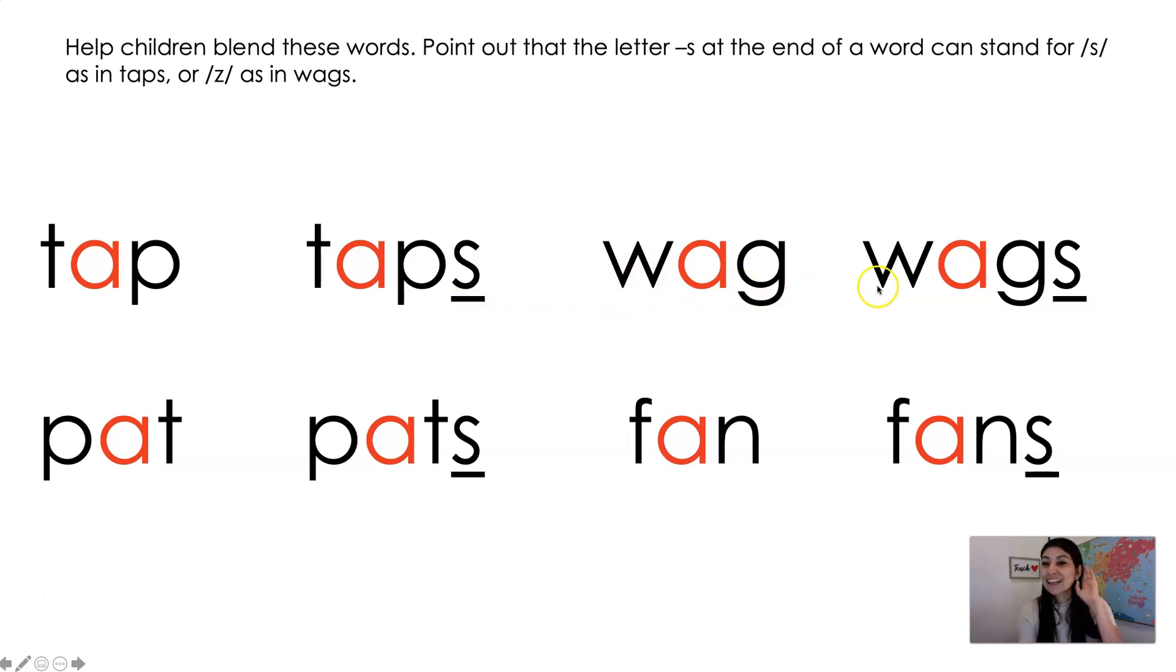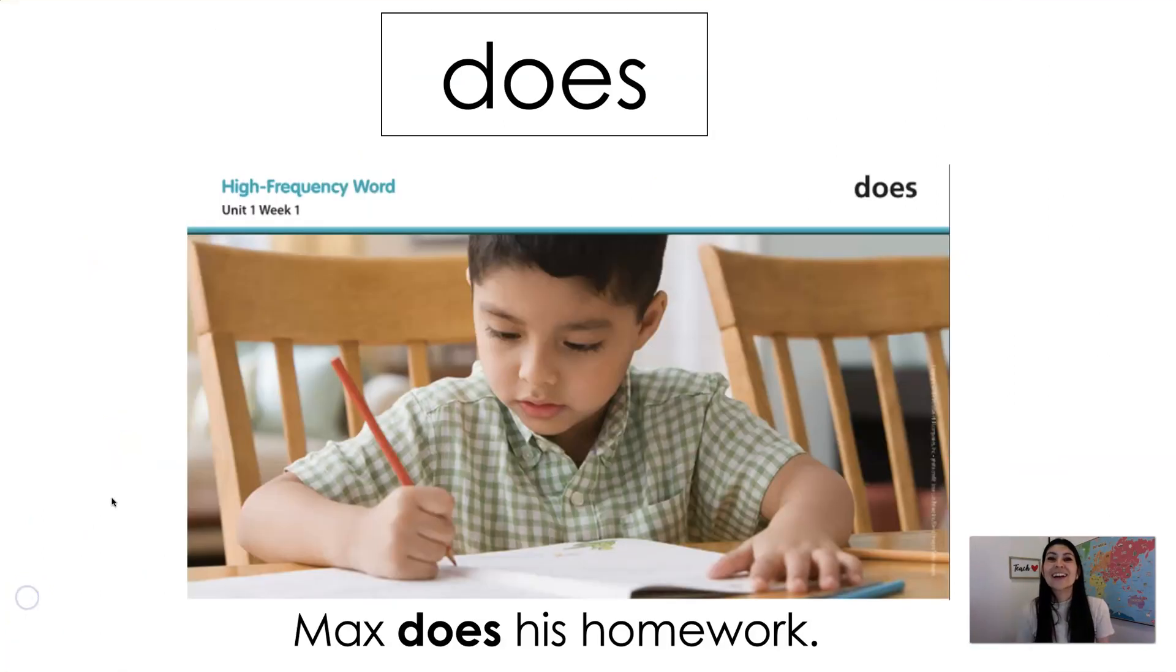Remember that's a tricky one. It makes the z sound. Pat. Now I have pats. Fan. Now I have fans. Good job. Very good. All right. So what I want us to do now is I want us to go ahead and practice some of our sight words. All right. So here are the sight words we've been practicing for this week.